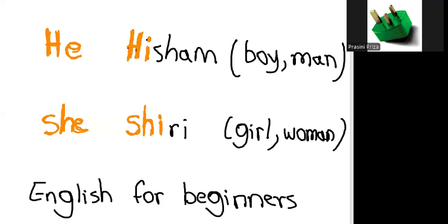Okay, so having trouble remembering when to use he and when to use she? Now we're going to use a mnemonic which is going to make it very easy for you to remember. So just think of he as Hisham - it's a man's name or a boy's name - and then she or Shiri, which is a girl's or a woman's name.